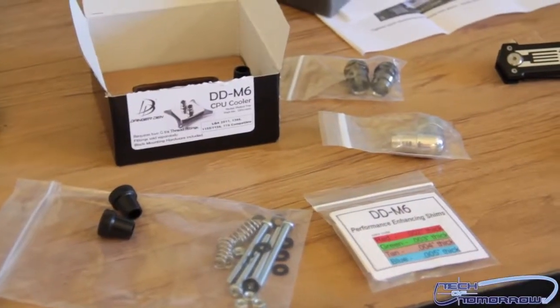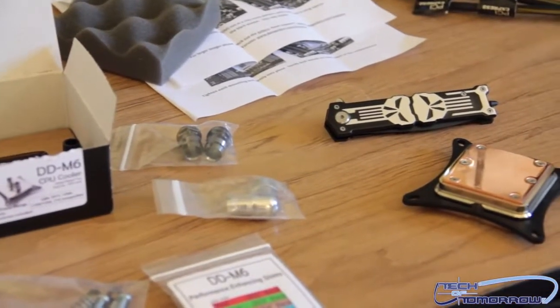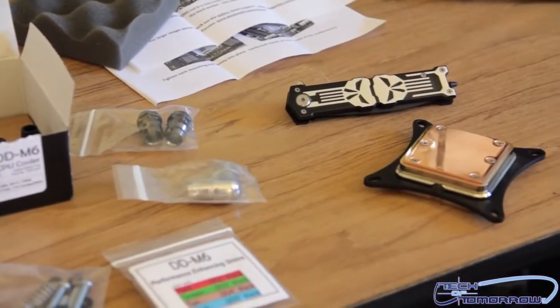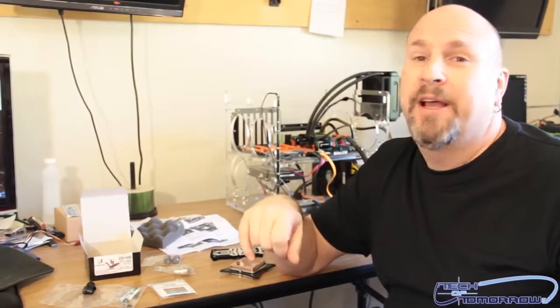So here I have it, folks. Here's everything that comes in the box of Danger Den's latest DD-M6 CPU cooler, built for the LGA 2011 platform, featuring a solid copper bottom and a nickel plated top. But today, we just brought you the unboxing. So thanks for being with us here on the Tech of Tomorrow YouTube channel. We'll see you folks back here tomorrow.